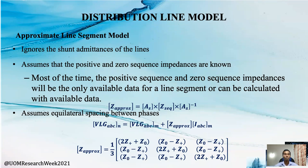By using equilateral spacing between phases, the approximate impedance matrix can be calculated as shown in the slide. This approximated impedance matrix will be used in the forward sweep to calculate the downstream node voltage with respect to the upstream node voltage.